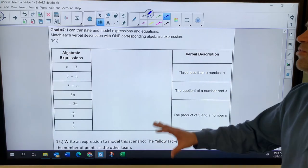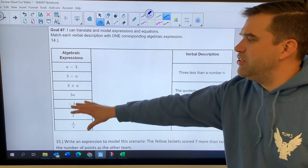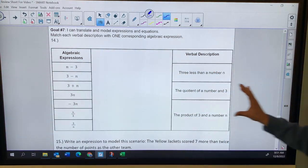Goal 7 is all about translating. So being able to take these expressions and turn them into words, take words, turn them into expressions.